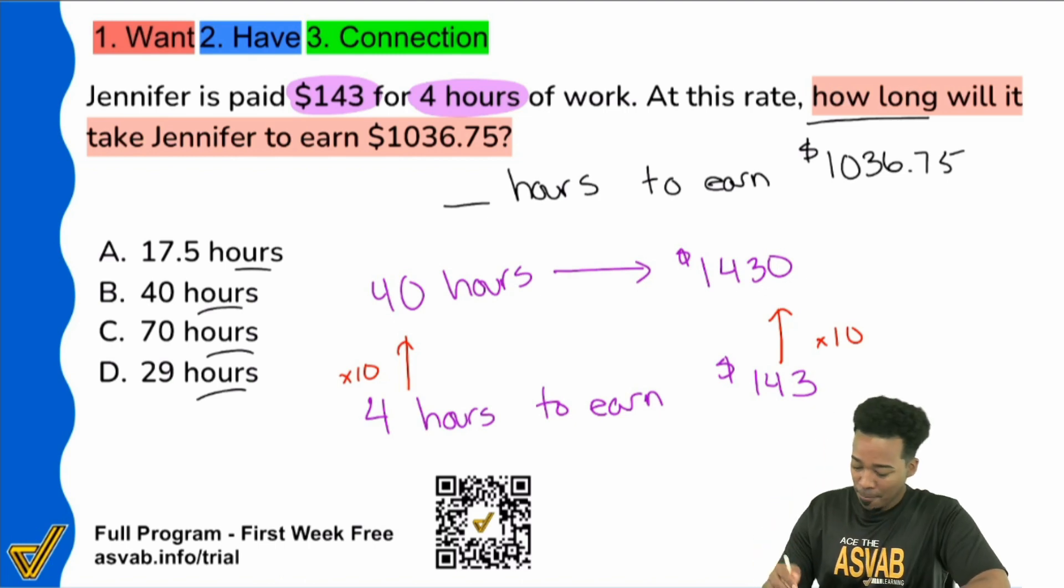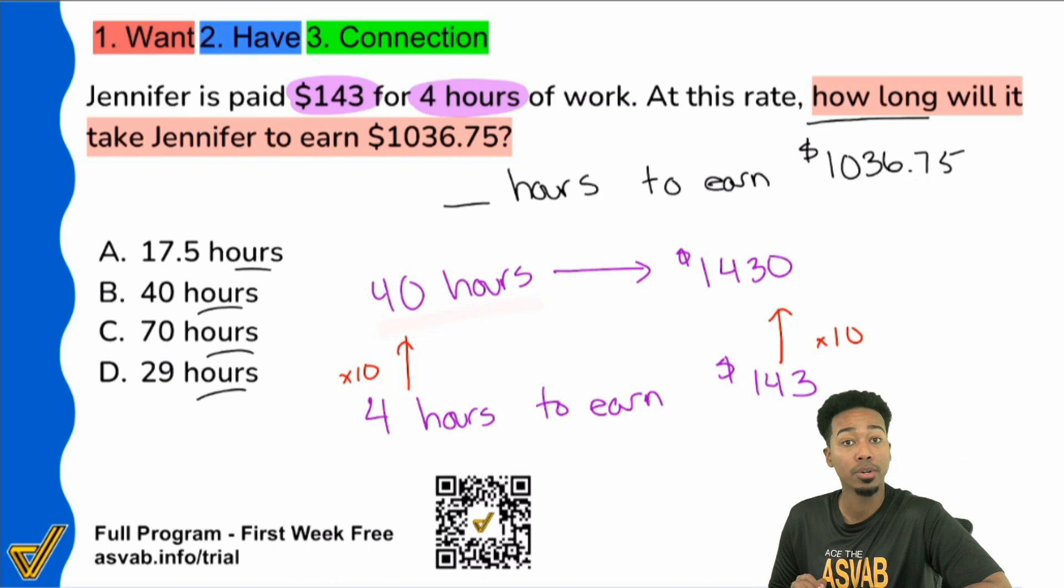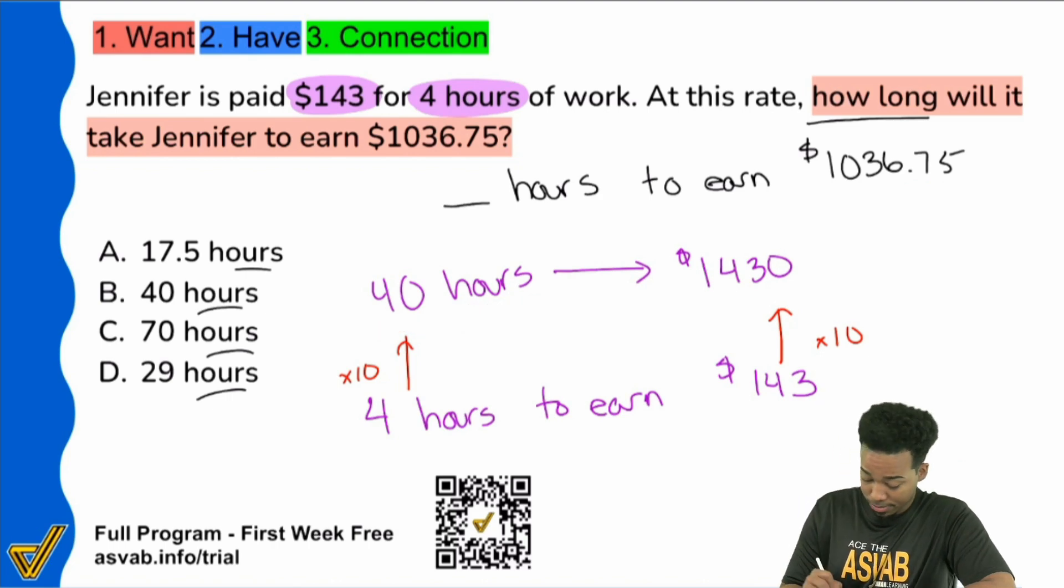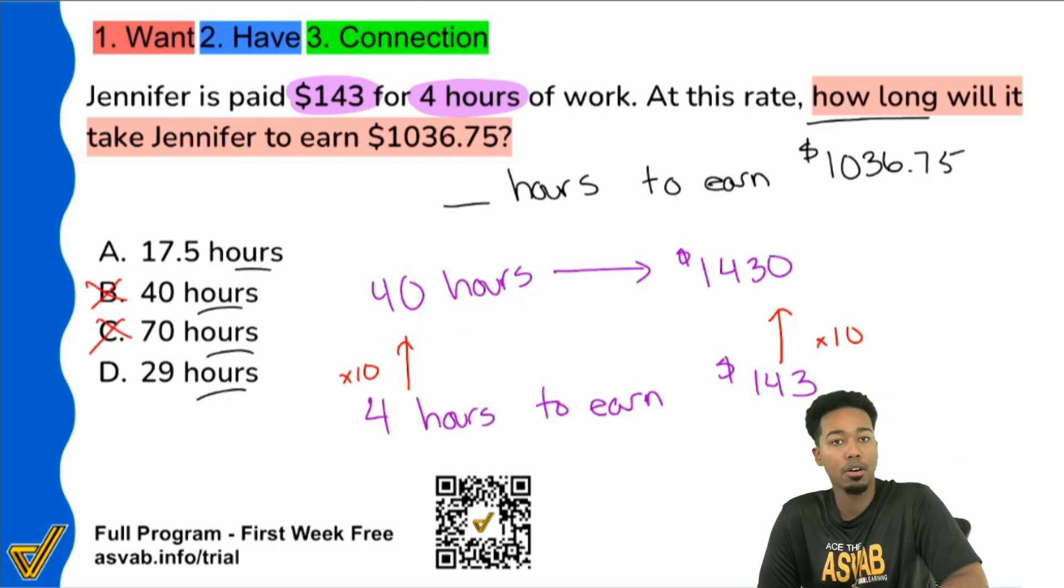Now let's use that as a little benchmark. Watch this. So is 1,036 more or less than 1,430? It's less, right? So that means it should be less than 40 hours. So that means B and C aren't it. B and C are not it.